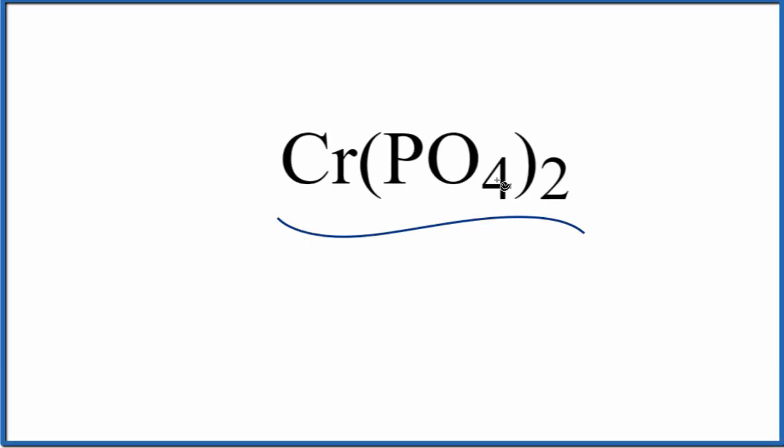Let's write the name for Cr(PO4)2. First thing to note, we have Cr. That's a metal. In fact, it's a transition metal.